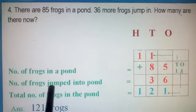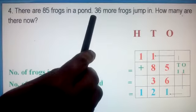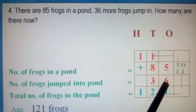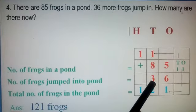Number of frogs jump into pond. How much is it? 36. So 6 in 1's place and 3 in 10's place. Now what are we going to do?